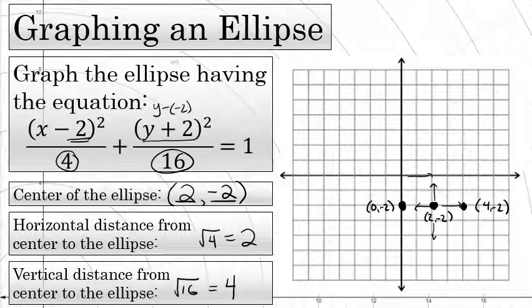So from the center, I'll go up four units to find a point on the ellipse, the highest point on the ellipse in this case. And from the center, I'll go down four units to find another point on the ellipse, the lowest point on the ellipse. The bottom point, 2 negative 6. The top point, 2, 2.